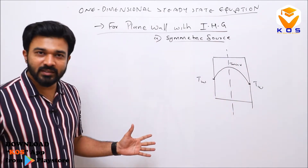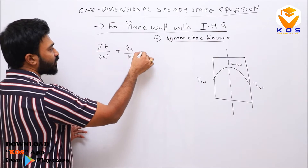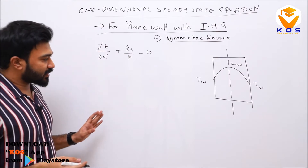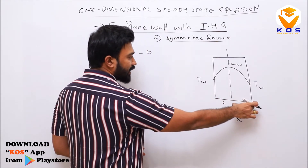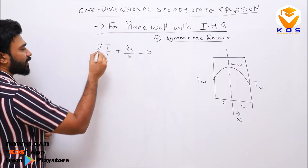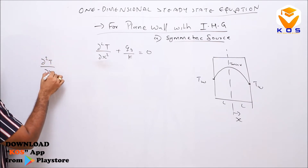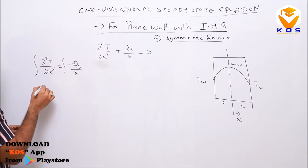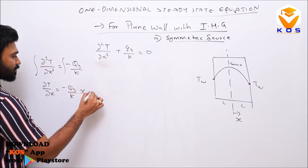We have a steady-state conduction equation: d²T/dx² + qg/k = 0. Here x is measured from the middle, this half-length is L, and the total length is 2L. Integrating once: dT/dx = −qg/k · x + C1.